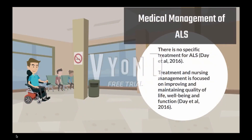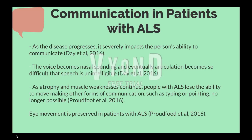Depending on the time of diagnosis, life expectancy for patients with ALS is five years. No specific treatments exist for ALS and treatment is generally supportive, focusing on improving and maintaining quality of life, well-being, and function. An important factor to consider in management is communication. As the disease progresses, the voice becomes increasingly nasal sounding and articulation becomes difficult, making speech unintelligible due to phonatory impairments related to loss of tongue muscle function, eventually causing the inability to speak. As voluntary movement becomes more limited, other forms of physical communication are also lost. However, eye movement is preserved, and most patients do not experience any cognitive decline.